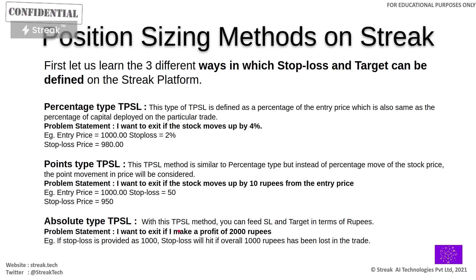The third method is absolute type TPSL. Problem statement: I want to exit if I make a profit of 2,000 rupees total. This is based on total profit amount, not per-unit price movement. Similarly for stop-loss: if my total loss reaches 1,000 rupees, then my stop-loss is hit. You can decide which method to choose based on your problem statement. You can use this slide as a reference when building your strategy.